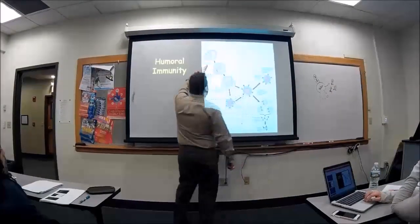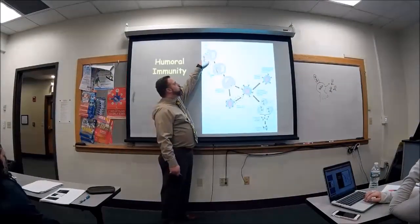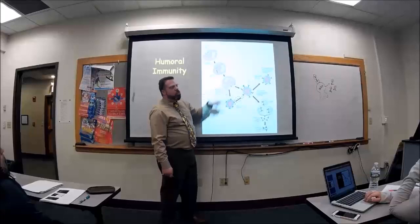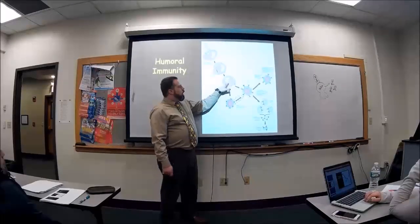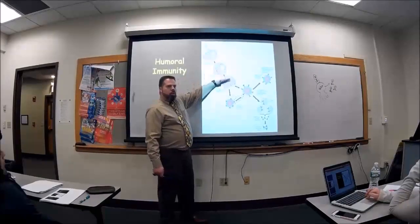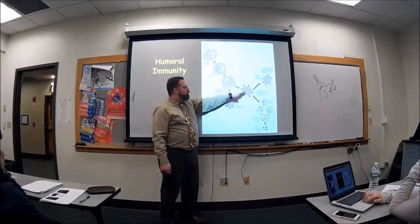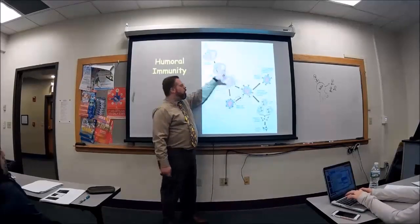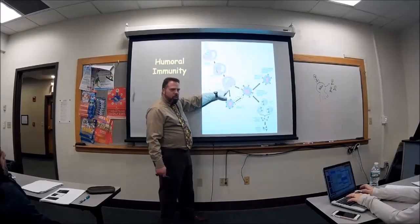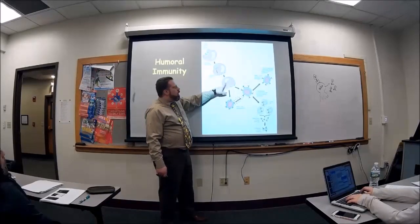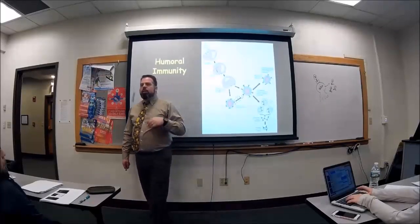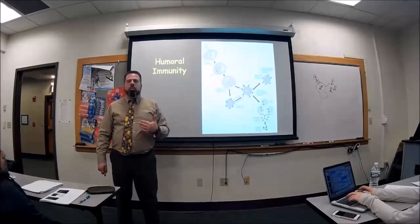Here you've got a macrophage — it sees a little bacteria. It's going to engulf that through phagocytosis, break up the bacteria, and save a piece of it as an antigen. It's now going to present that antigen to the innate system. This is the innate, the natural, the nonspecific system — phagocytosis. This macrophage will present it to part of the adaptive, the acquired, the specific system.